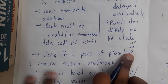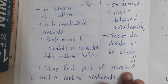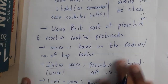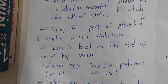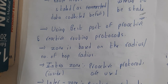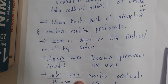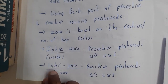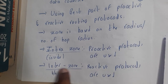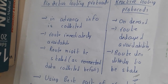By using the best parts of proactive and reactive approaches — getting info in advance and routing on demand — we combine them to form a hybrid protocol. The zone is based on the radius of hops. Two terminologies are used: intra-zone, where proactive protocols are used inside the zone, and inter-zone, where reactive protocols are used from zone to zone.